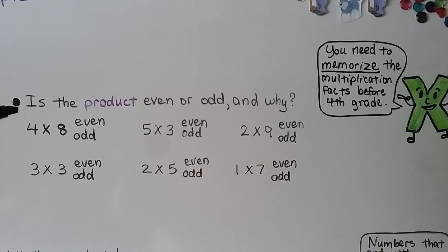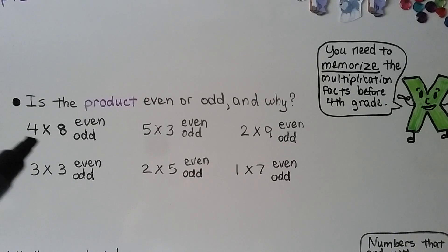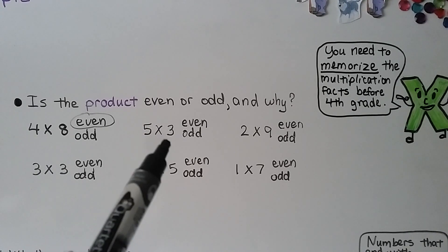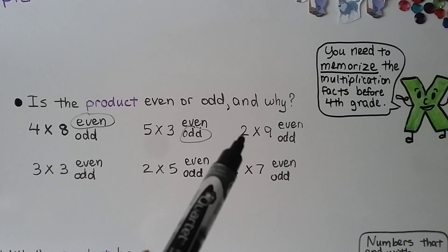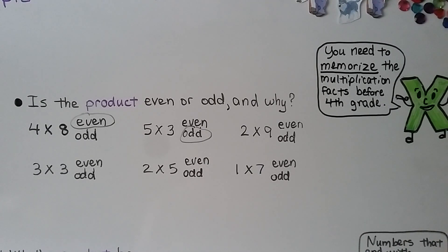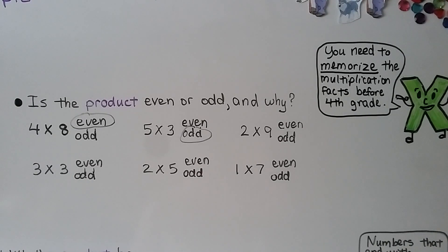Is the product even or odd, and why? For 4 times 8: 4 is even and 8 is even. When at least one factor is even, the product will be even — and both are even, so our product is even. For 5 times 3: 5 is odd and 3 is odd. Both factors are odd, so the product will be odd. For 2 times 9: 2 is even and 9 is odd. At least one factor is even, so our product is even.